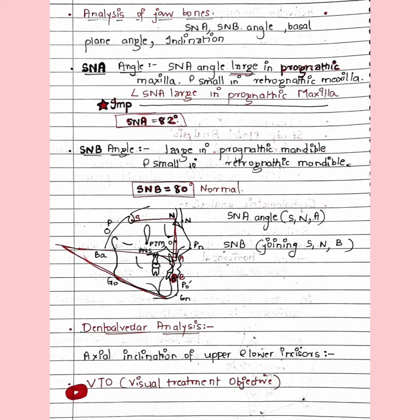The SNB angle: if it is large, the mandible is prognathic or forward; if small, the mandible is retrognathic. Then we perform the dental alveolar analysis — checking the axial inclination of the upper and lower incisors. If they are crowded, we do not give the activator; if they are retroclined, we make them upright. Then we perform the Visual Treatment Objective (VTO).